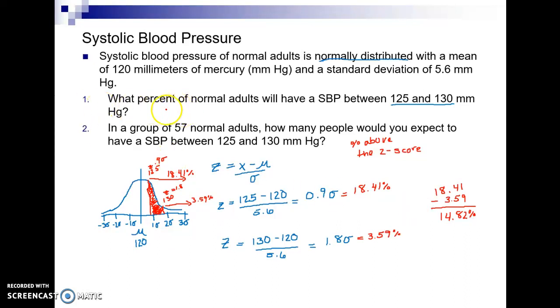So what percent of normal adults are in this range, it would be 14.82 percent. This is why I always recommend drawing the picture because the picture tells us what to do with the percents. The Z-scores we can do without the picture but then once we get these percents off our chart it is truly the picture that tells me what to do and how to make sense of it.